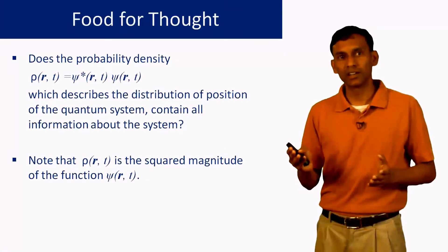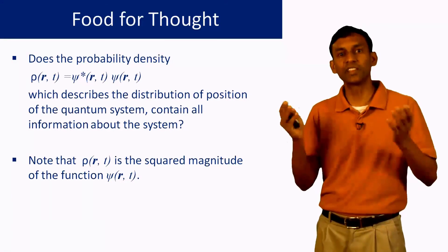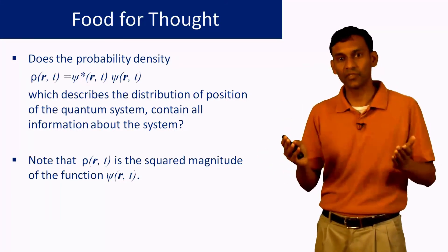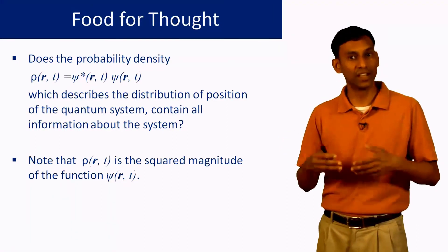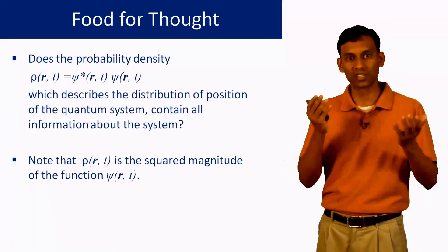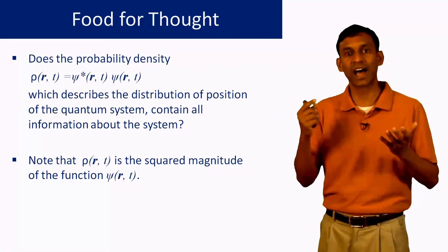You might wonder whether ψ*ψ, which is the probability density, tells you everything about the system. Think about it: is that enough, or are you losing some information when you do ψ*ψ? So do you really need ψ to know everything about the system, or is ψ*ψ, which tells you about where the position of the system is, that quantity enough?